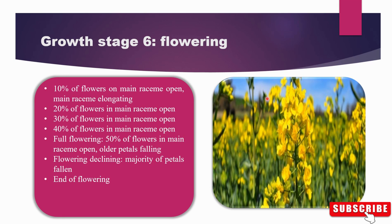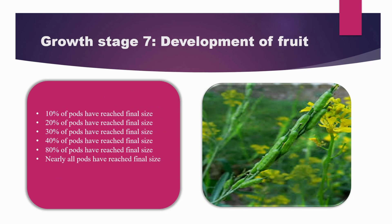Coming to the next stage, that is the development of the fruit. Here you can see that the development of the fruit of the mustard has progressed, and 80% of the pods have reached their final size in this stage. Nearly all pods have reached the final stage of fruit development.